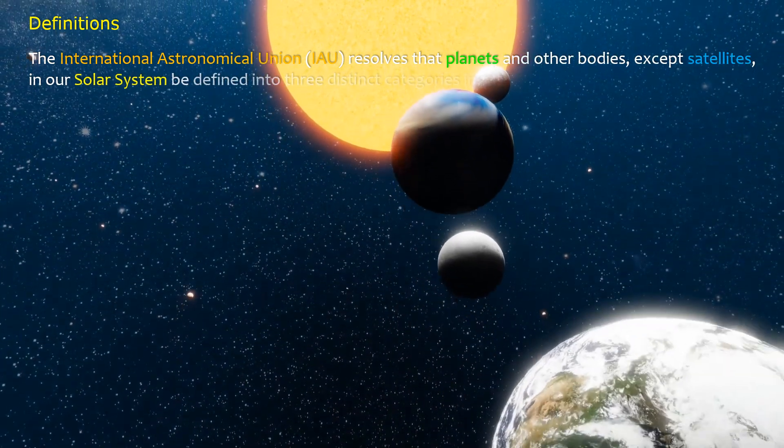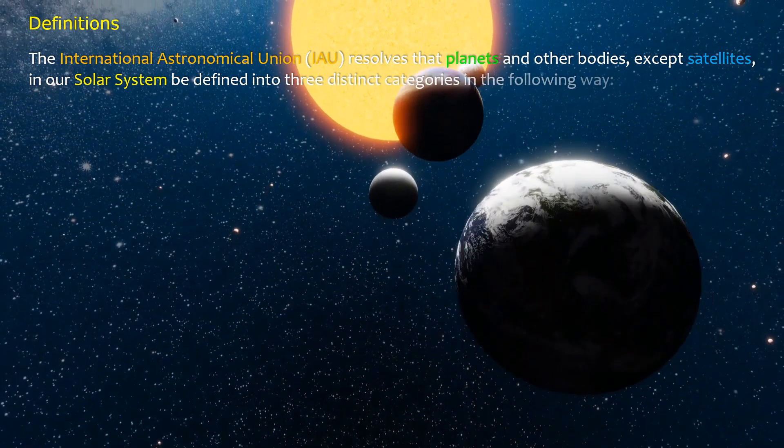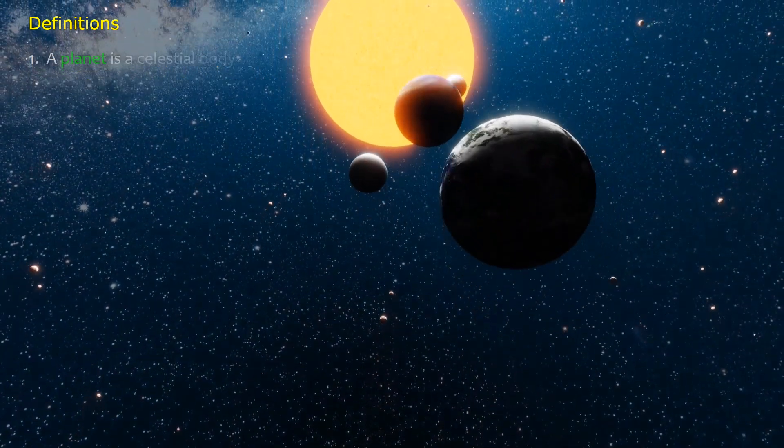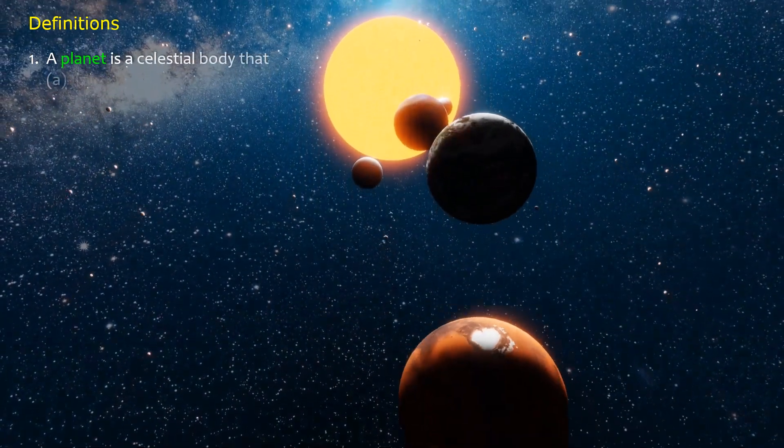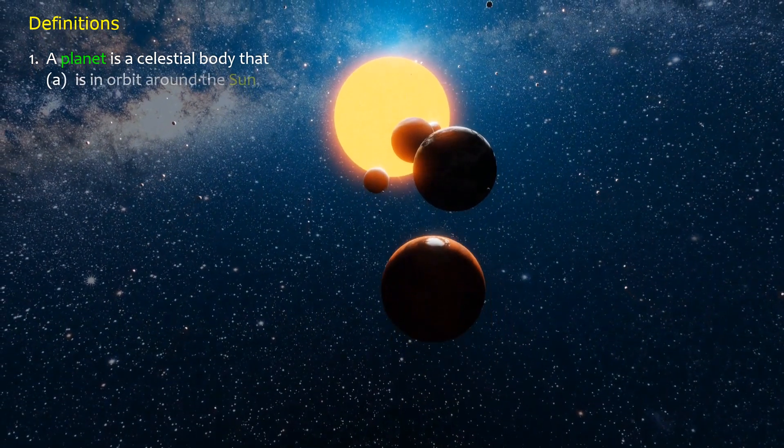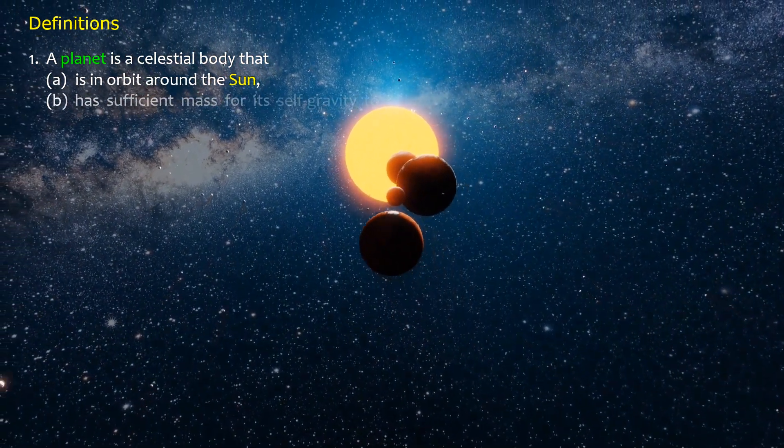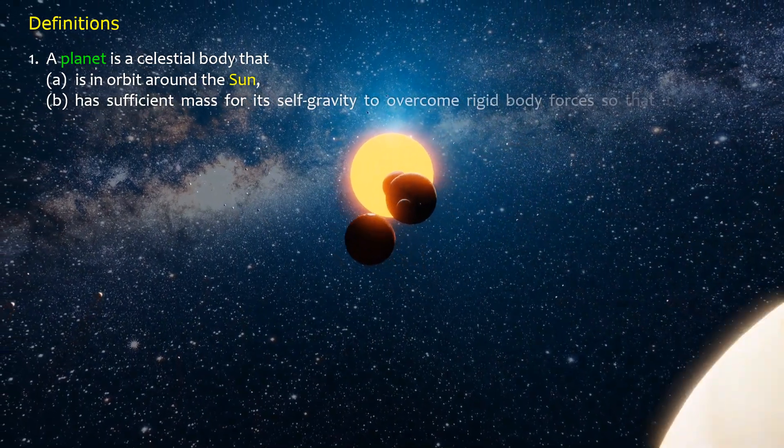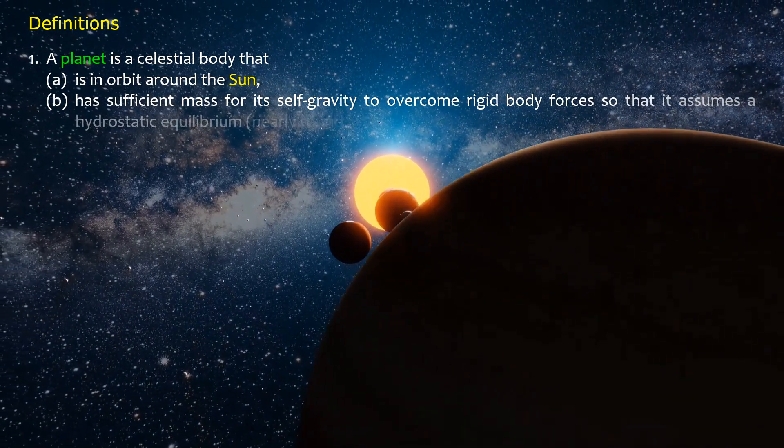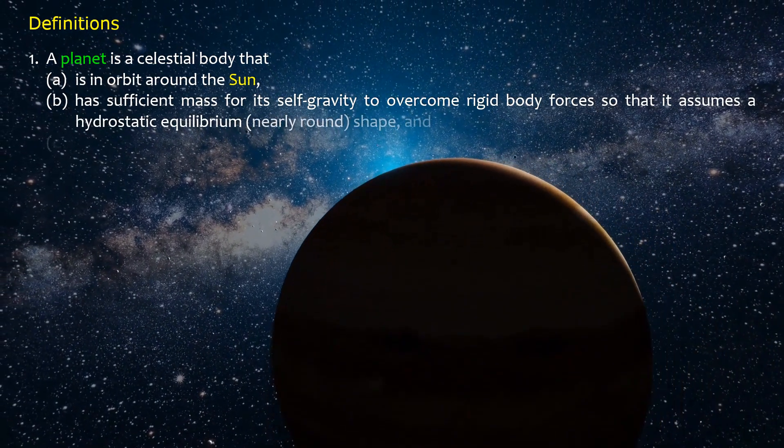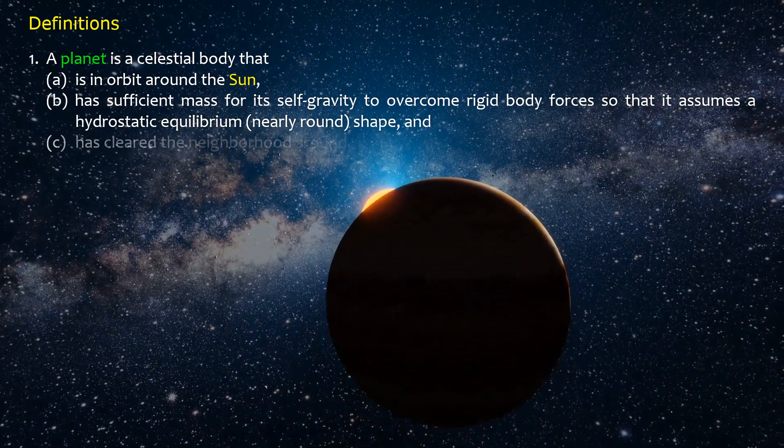One: A planet is a celestial body that (a) is in orbit around the sun, (b) has sufficient mass for its self-gravity to overcome rigid body forces so that it assumes a hydrostatic equilibrium nearly round shape, and (c) has cleared the neighborhood around its orbit.